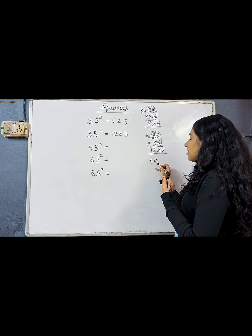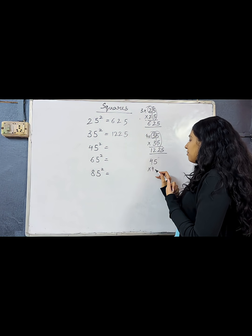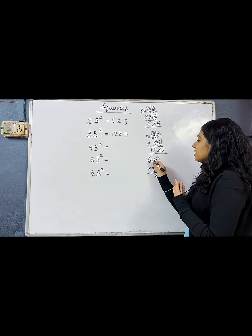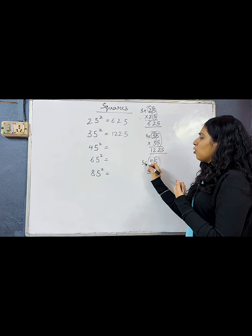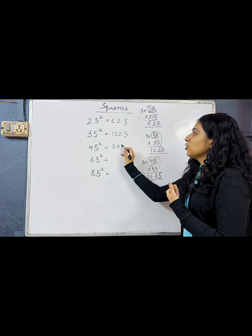45 square means 45 into 45. 5 into 5, 25. 4's next number? 5. 4 times 5 is 20. So the answer is 2025.